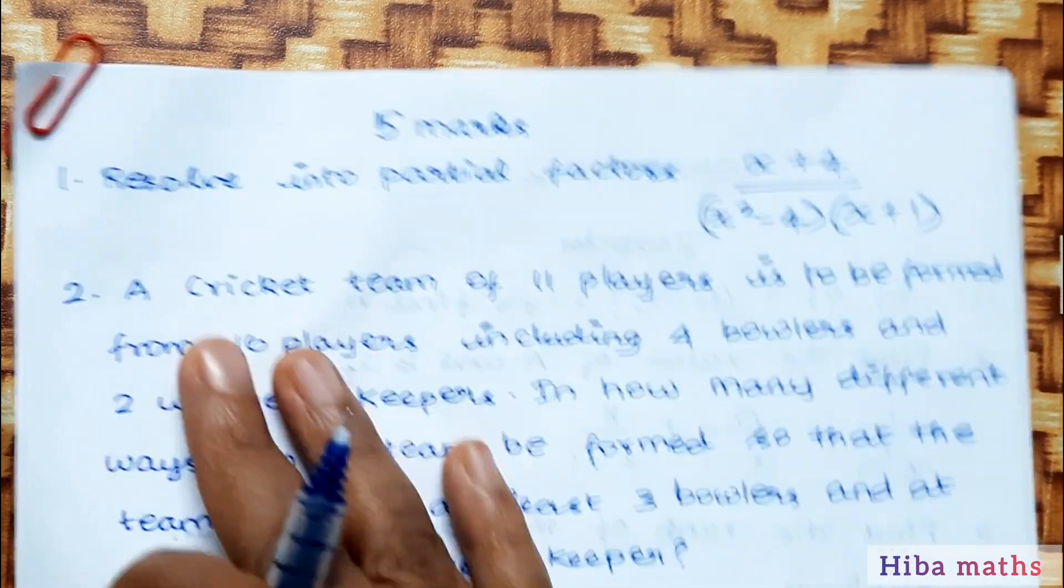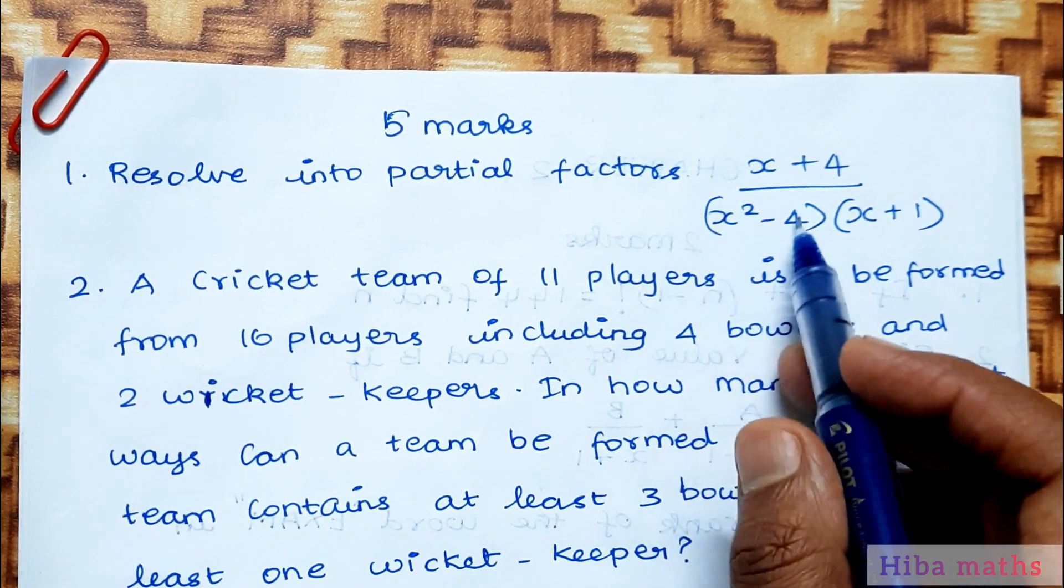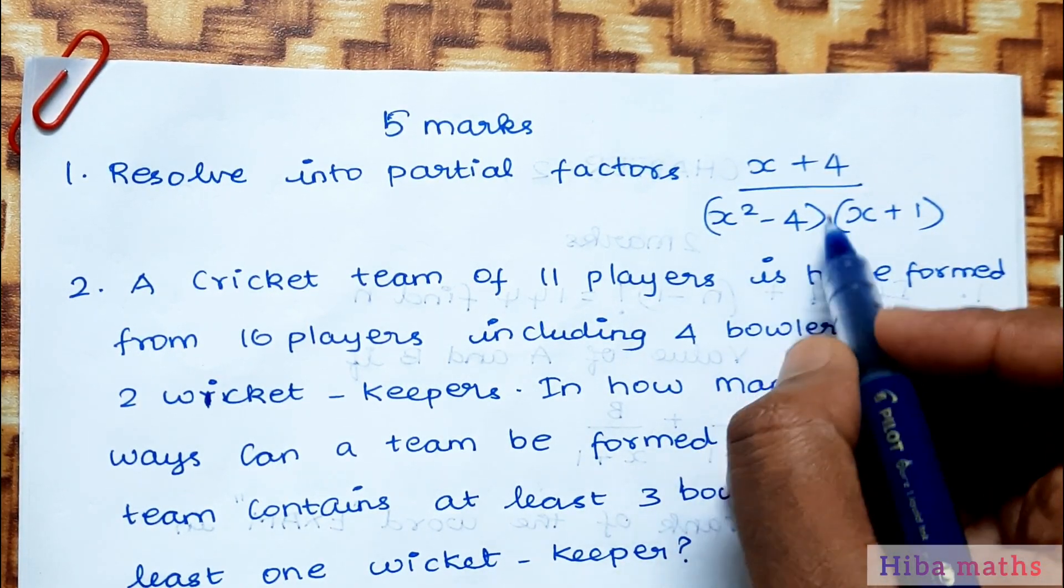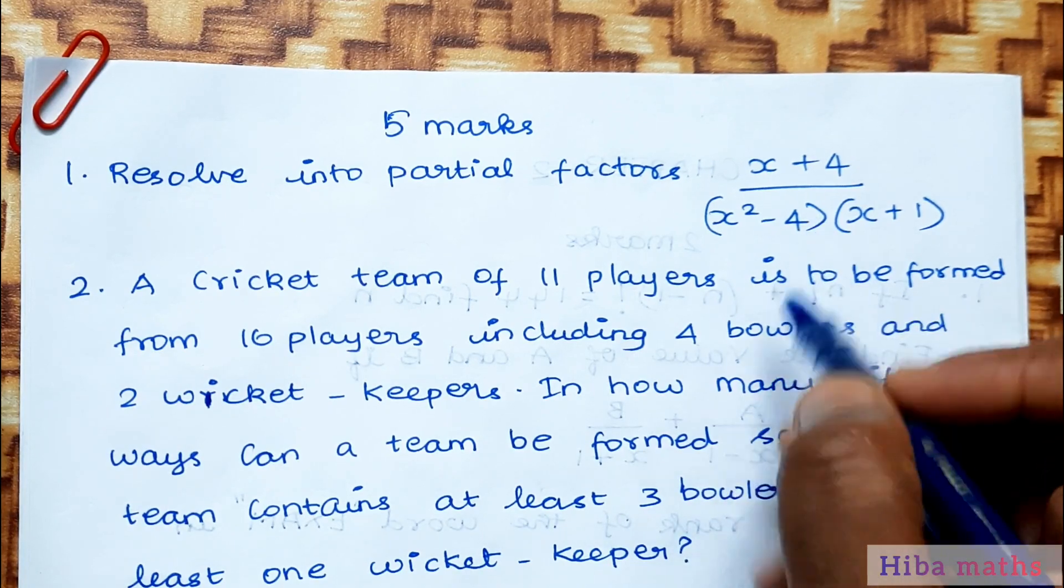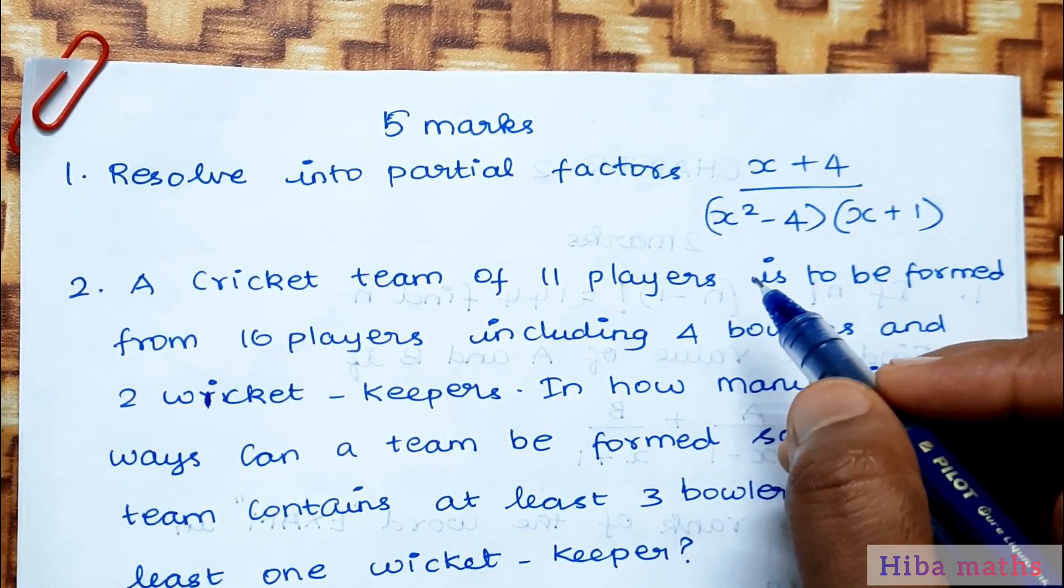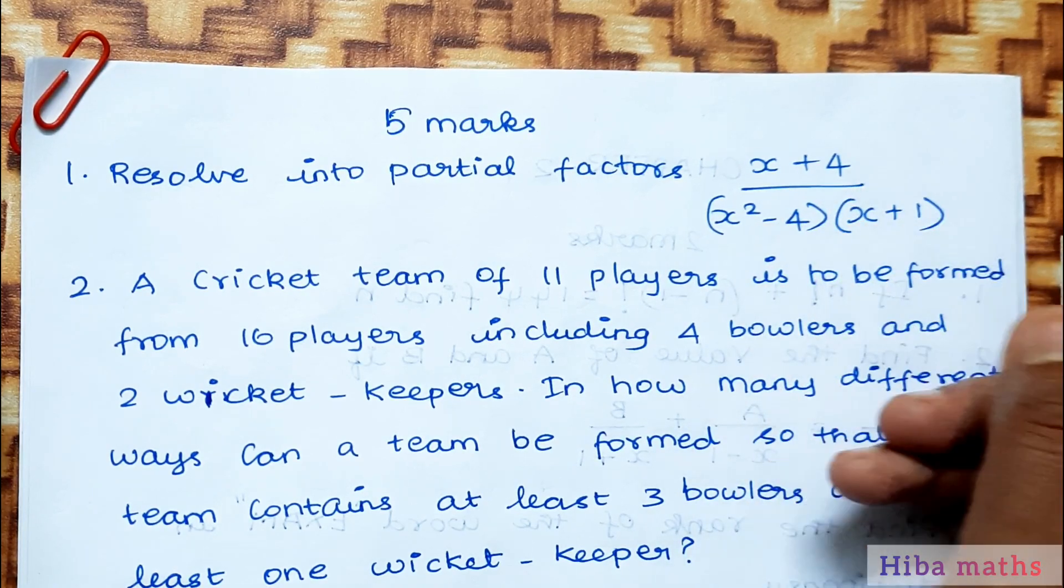Next, 5 mark questions. First, partial fraction: (x+4)/(x²-4x+1). When the term comes as x² or a², we use a²-b² form to solve. If that doesn't work properly, use the other method where x² becomes ax+b.